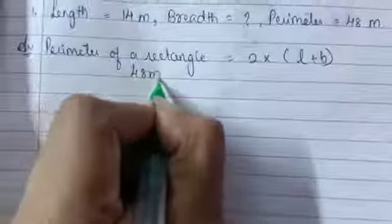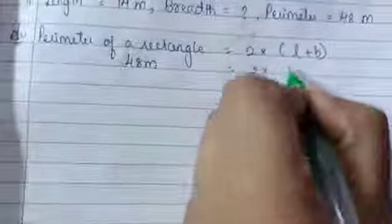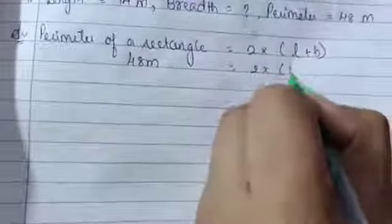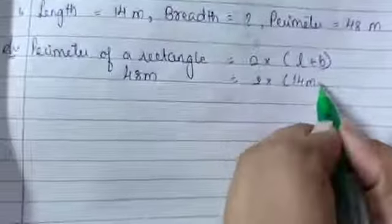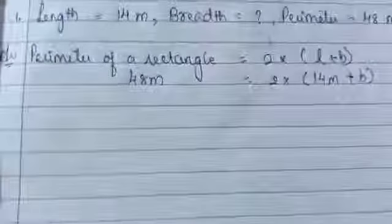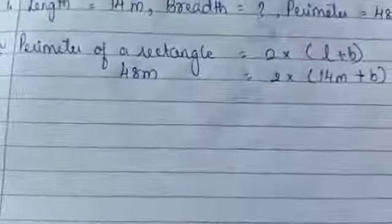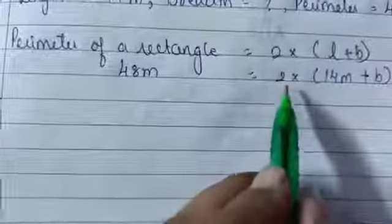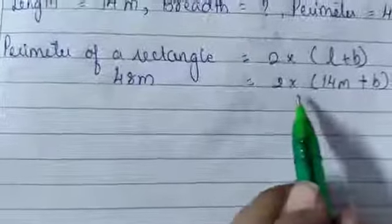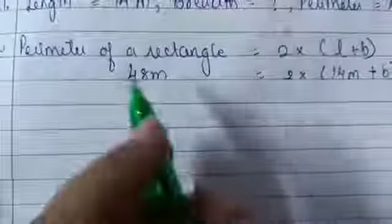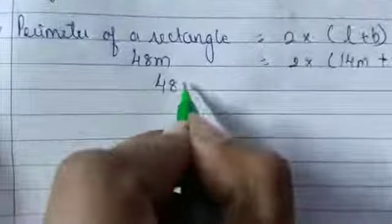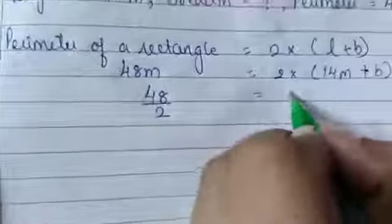Perimeter is 48 metres. So 48 equals 2 multiplied by (14 plus B). We will do side change and sign change — 2 moves to the other side and becomes division. So 48 divided by 2 equals 14 metres plus B. 48 divided by 2 gives us 24. So we write 24 metres equals 14 metres plus B.